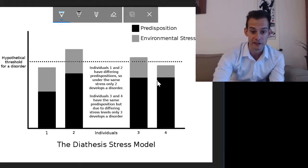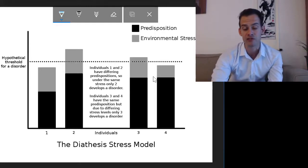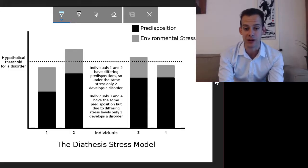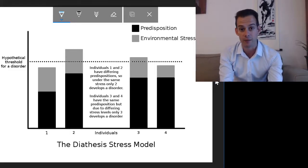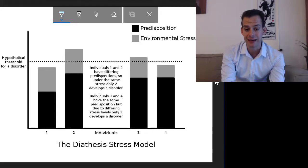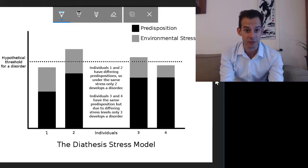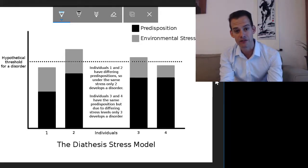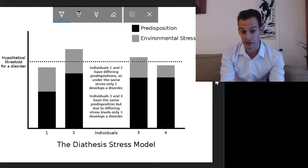Individual three here is experiencing more stress and this greater amount of stress just pushes this person over the hypothetical threshold, so individual three would develop this mental illness. Whereas individual four with the same genetic predisposition has a lower amount of stress and as a result doesn't develop the mental illness.